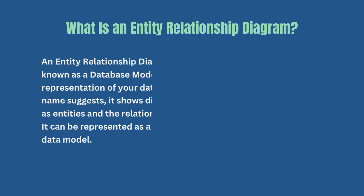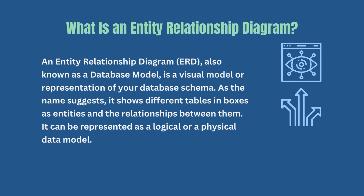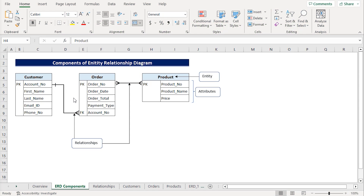In a nutshell, an entity relationship diagram, also known as a database model, is a visual representation of a database schema. It shows the different entities and their relationships between them. A typical entity relationship diagram consists of three key components: entity, attributes, and relationships.